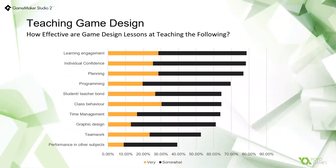We sent out a questionnaire to our teachers at the start of November in 2020. The responses are consistent with when we asked the same question back in 2019, where we were asking how effective game design lessons are at teaching various aspects. Learning engagement came out top, followed by individual confidence, planning, and programming. There are also some really nice results showing that it improves the student-teacher bond and class behaviour as well.